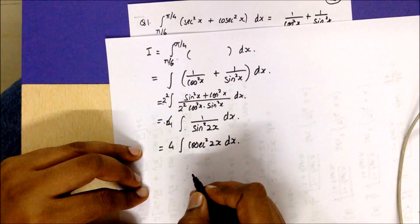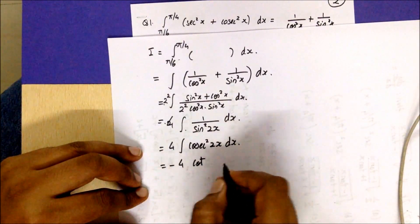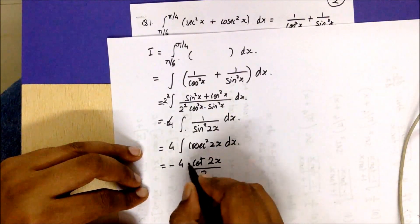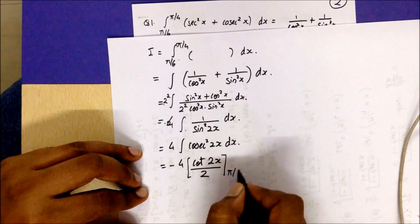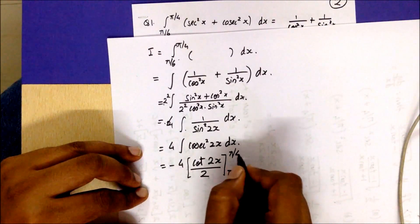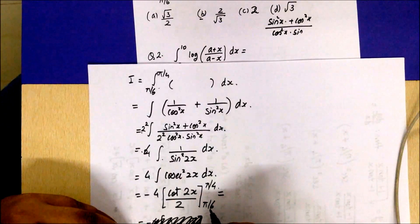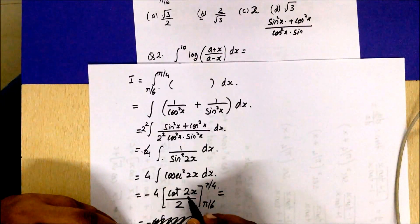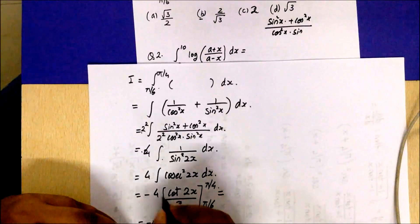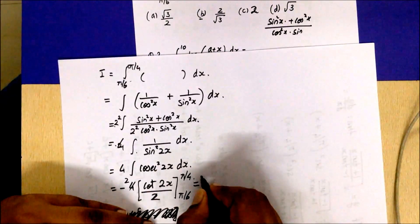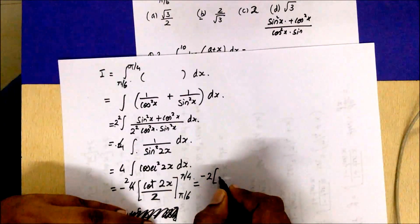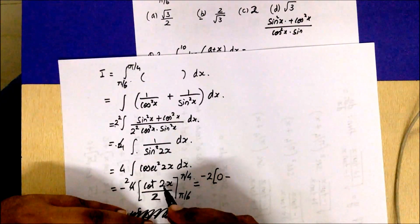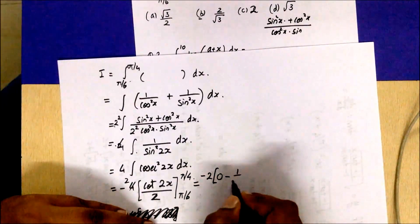The integral of cosec²x is nothing but −cotx. So that's going to be −cot(2x)/2, because you have to divide by the coefficient — that's the basic integration you should know. The limits are π/6 to π/4. Substituting the upper limit: 2·(π/4) = π/2, and cot(π/2) = 0. So the upper limit gives 0. For the lower limit substituting π/6, we get cot(π/3) which is 1/√3. So the value comes out to be 2/√3.